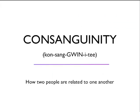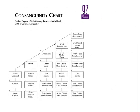Consanguinity, or how two people are related to one another. This is a topic that confounds even the most experienced genealogists, and with good reason. This is your typical consanguinity chart. You get a bunch of boxes. You're supposed to start somewhere and end up somewhere else, and depending upon where you end up, that's supposed to tell you how two people are related to one another. The problem with this is I never know where to begin, I don't know where to end, and it's impossible for me to understand, much less explain it to someone else.